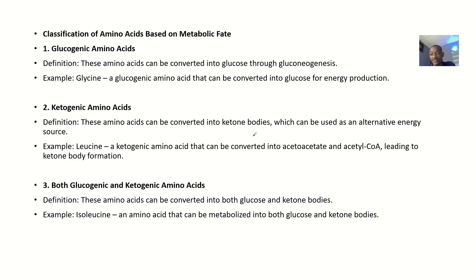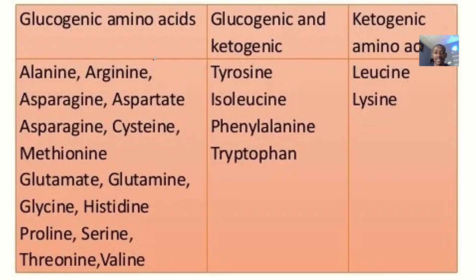Now looking at classification based on metabolic fate: glucogenic amino acids are those that can be converted to glucose through gluconeogenesis. An example is glycine. There are many glucogenic amino acids — develop a mnemonic to remember them all.